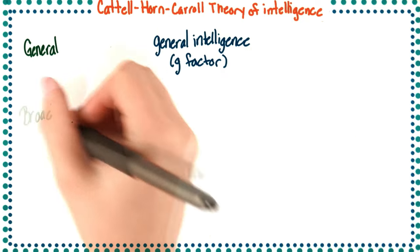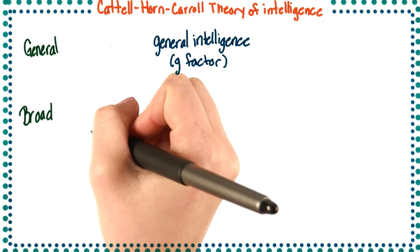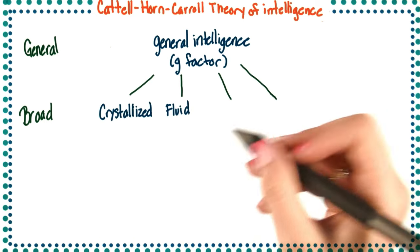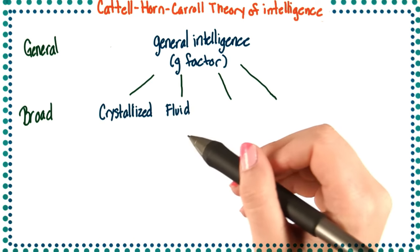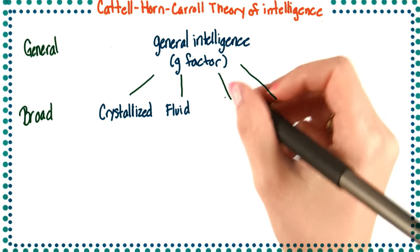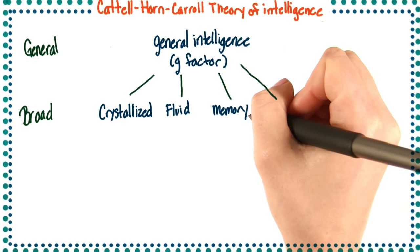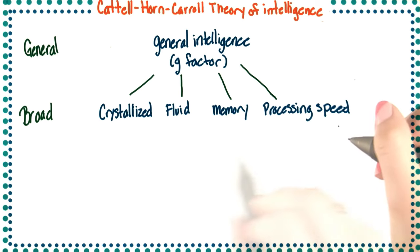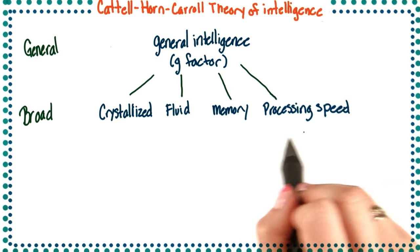The second level is the broad level of intelligence. These are your general abilities. This is where your crystallized intelligence and your fluid intelligence comes into play, as well as things like your general memory or your processing speed. Now, there's other abilities that go on this level, but these are the main four.